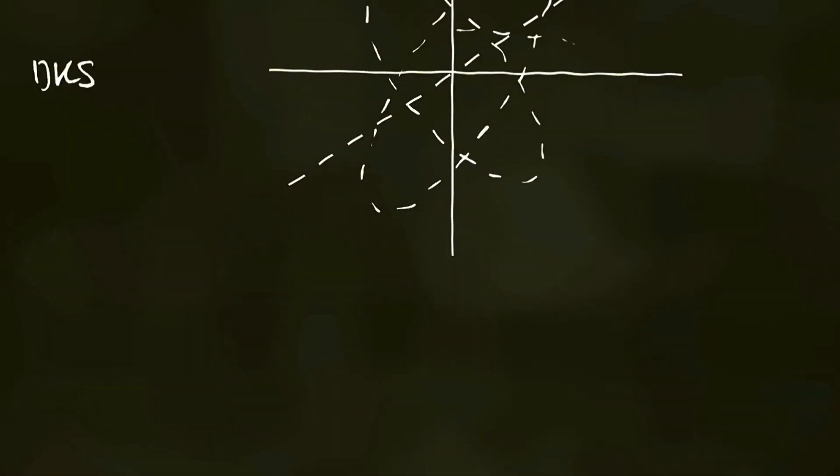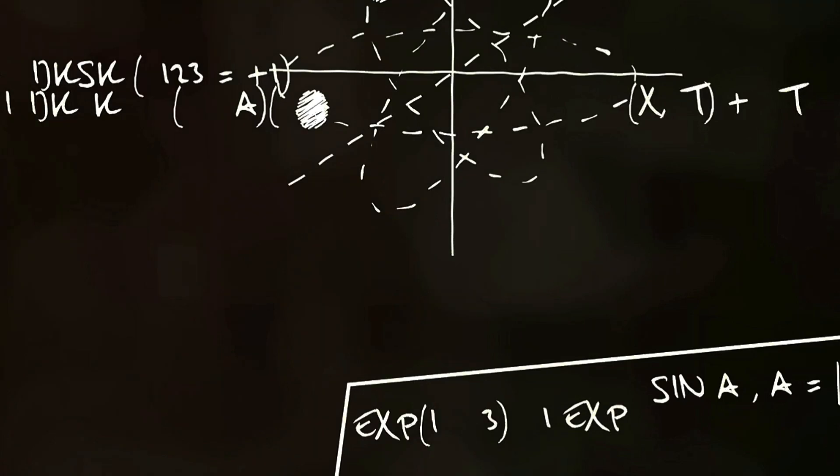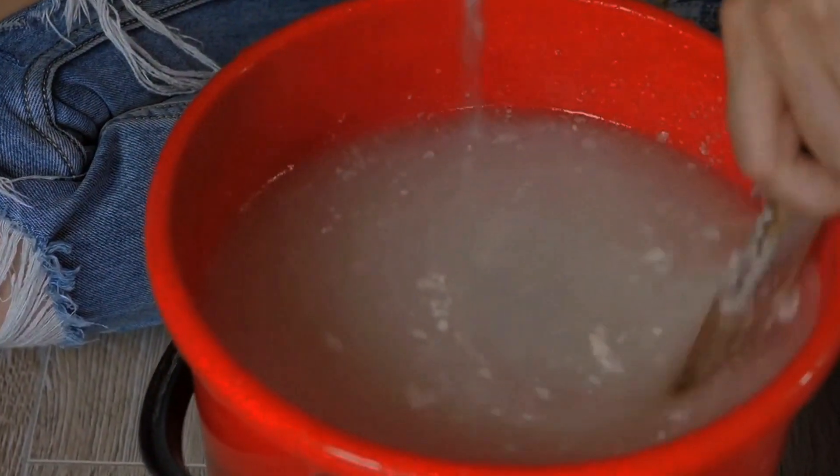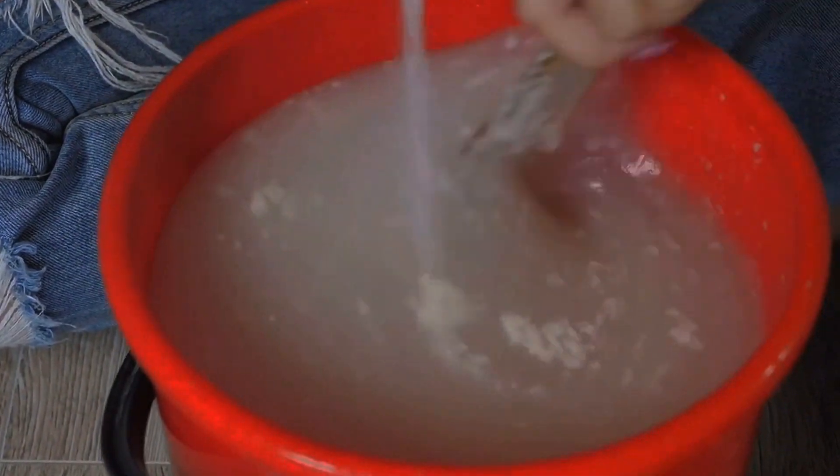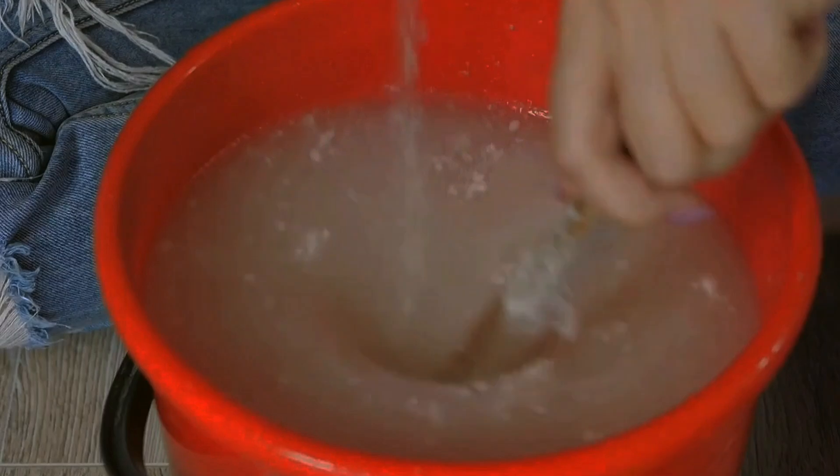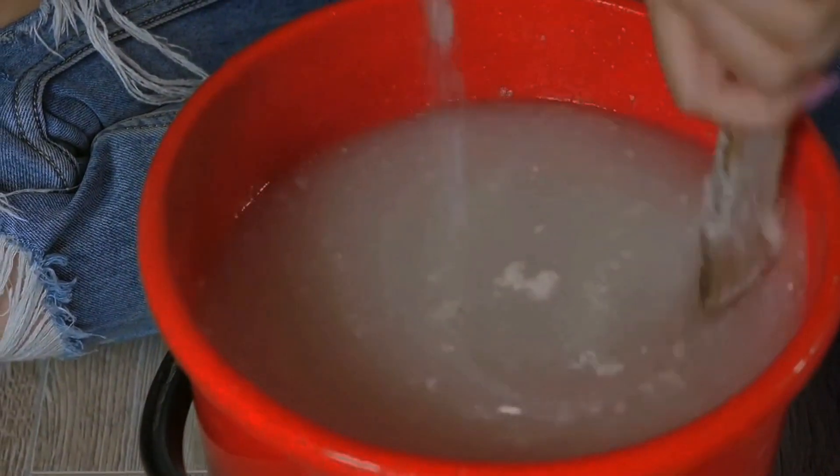As we continue our exploration of the concepts surrounding Newton's bucket argument, it's essential to delve into the idea of centrifugal force. Centrifugal force is a fictitious force in Newtonian mechanics, also known as an inertial or pseudo-force. This force appears to act on all objects when viewed in a rotating frame of reference, and it is directed radially away from the axis of rotation.